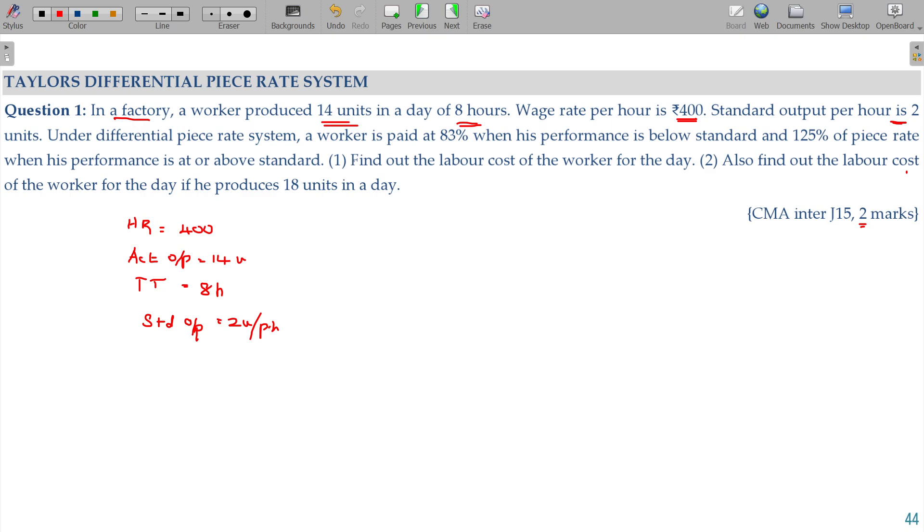Under the differential piece rate system, a worker is paid 83 percentage when his performance is below standard, 125 percentage piece rate when the performance is at or above standard. Find out the labour cost of the worker for the day.